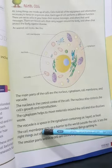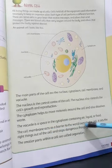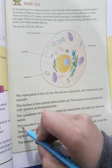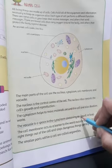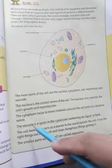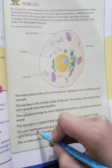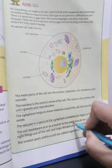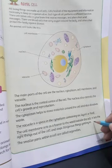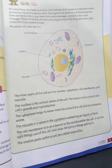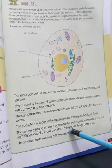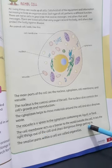The cell membrane acts as a barrier to the world outside the cell. It lets the right things — like oxygen and nutrients — into the cell, and stops dangerous things from getting in.